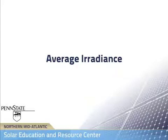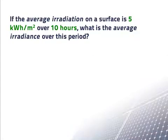This video shows an example for our discussion of irradiation and irradiance. Average irradiance is a useful way to characterize the amount of energy on a surface over a period of time. Here is a quick example of how to calculate average irradiance.